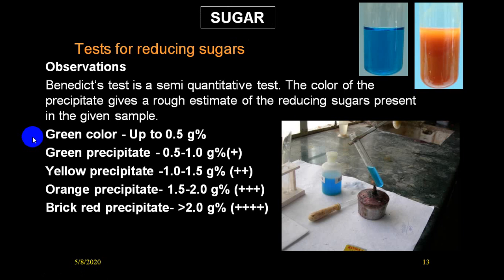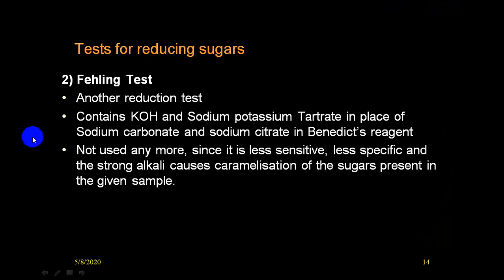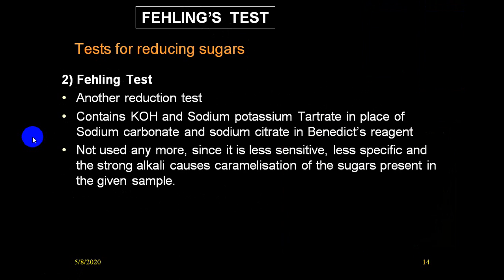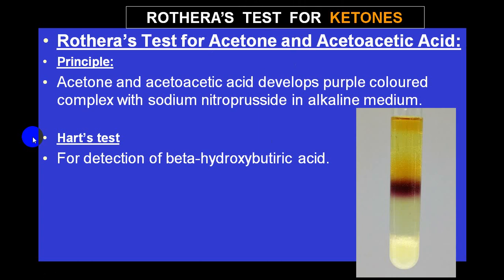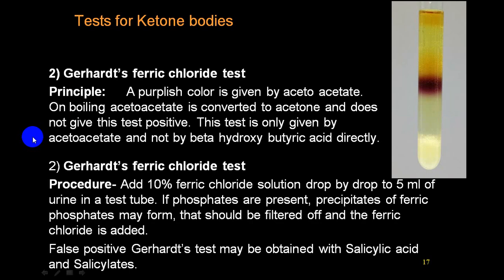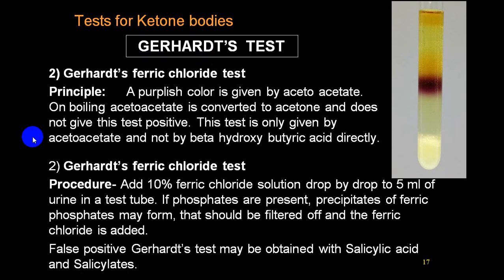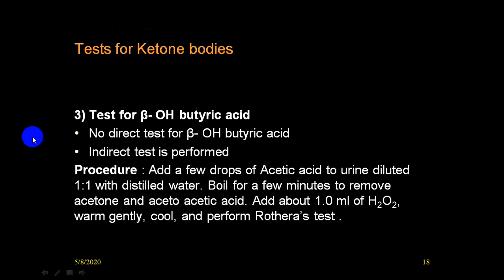There is another test called Fehling's test, which uses potassium hydroxide and sodium potassium tartrate. There is also a test for acetone called Rothera's test, which shows a purple color ring at the top with nitroprusside. This is positive when acetone is present in urine, which occurs in diabetic ketoacidosis and in cases of prolonged fasting. Another test for ketone bodies is Gerhardt's ferric chloride test, and yet another is the beta-hydroxybutyric acid test.